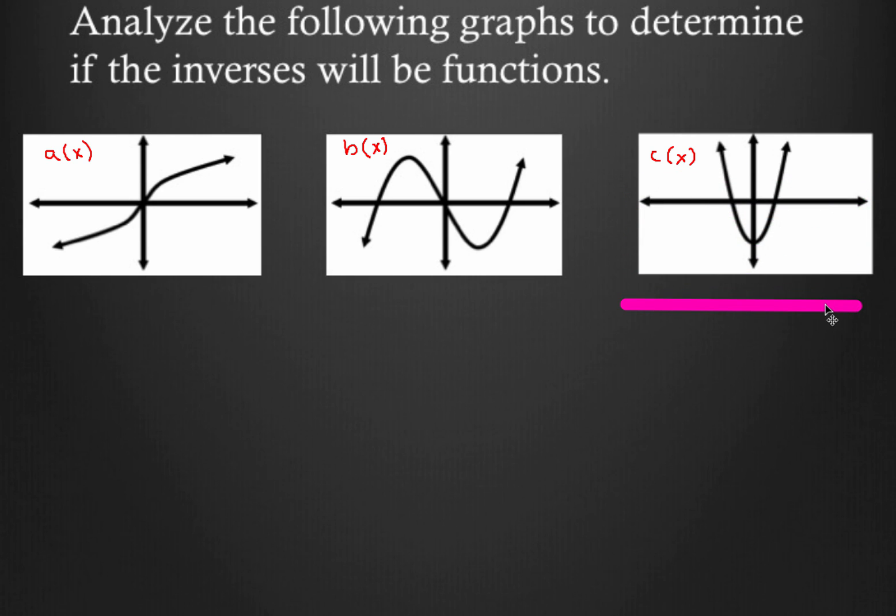So, one of these things is not like the others. One of these things is a little bit different. So based on this, which of these three does pass the horizontal line test? If you answered a of x, good for you. The other two, they don't pass the horizontal line test, which means only one of these graphs will have an inverse function.